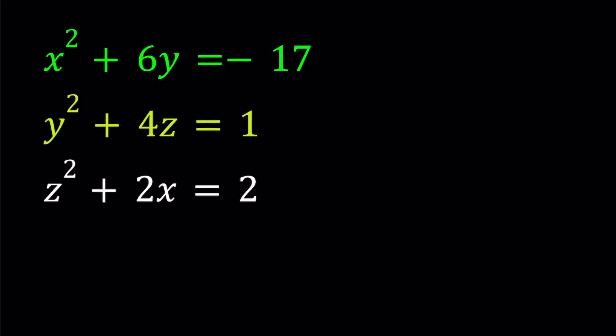Hello everyone. In this video, we're going to be solving a system of equations for real solutions. We have x squared plus 6y equals negative 17, y squared plus 4z equals 1, z squared plus 2x equals 2. And we're looking for real solutions. I'll be presenting two methods. Let's start with the first one.